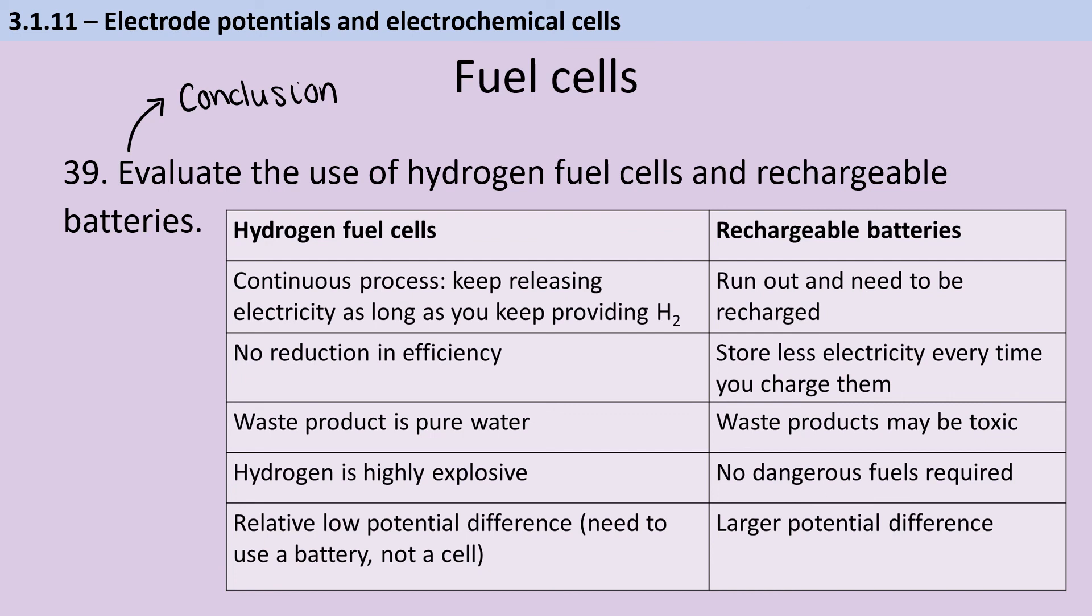For hydrogen fuel cell, the waste product is water, whereas rechargeable batteries have toxic waste products. But on the other hand, hydrogen is highly explosive, which is not a risk that you have with rechargeable batteries. And hydrogen fuel cells do also have quite a low potential difference, so they need to be wired together in series to make a battery rather than a cell.